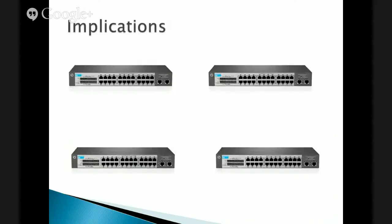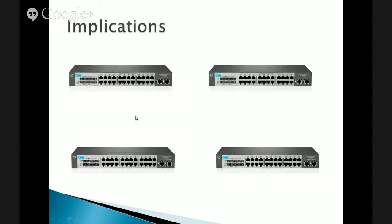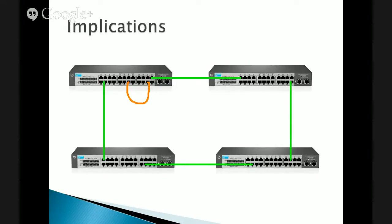So what are the implications here? We could have a loop like this: somebody accidentally plugs a cable in twice to a switch, or we're connecting switches — we connect this switch over here, connect this switch here, and then connect this switch here. We got a loop. A switch can forward, filter, or flood. So what does a switch do with a broadcast? We introduce a broadcast onto our network — that's going to go out all ports. That's what a broadcast does.